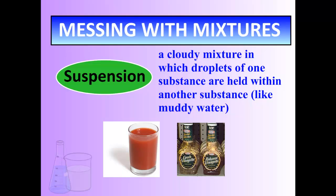Suspension is a cloudy mixture in which droplets of one substance are held within another substance — kind of like muddy water — and eventually one substance will settle out or separate from the other. A vinaigrette salad dressing, tomato juice, or muddy sandy water are great examples of suspensions. You let it sit long enough and you're going to have layers.